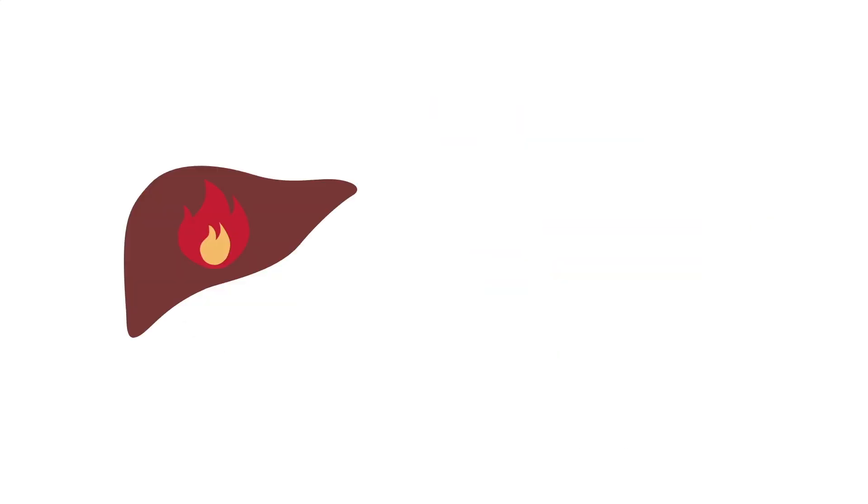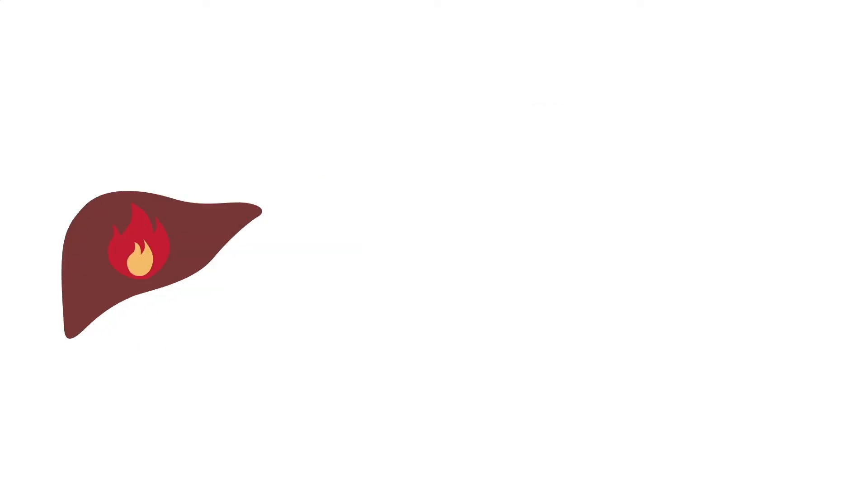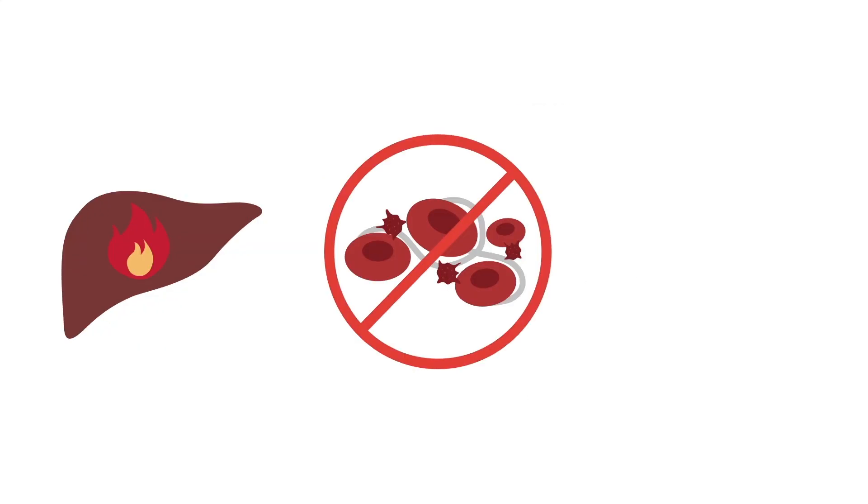The inflamed liver starts to release aspartate aminotransferase, or AST, and alanine aminotransferase, or ALT, which can be detected in blood tests. And because the liver can no longer make blood clotting proteins, the prothrombin time increases.